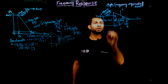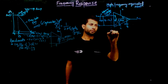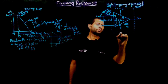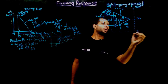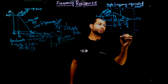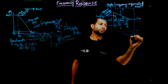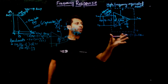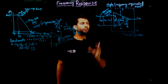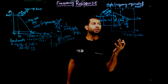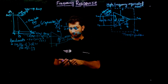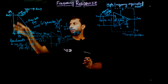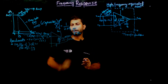What we want now is the transfer function of this model, which gives us the intuition — the result — of why this graph's amplitude comes down due to this capacitor.